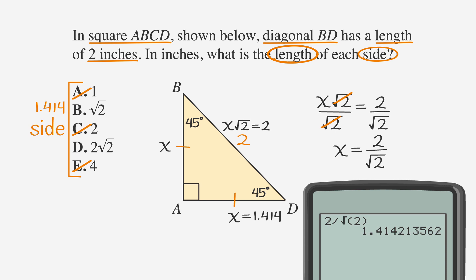When we put choice D into our calculator, we find that 2 times the square root of 2 equals about 2.828. That's not right, so we'll cross it out. But choice B, the square root of 2, also equals about 1.414. That's the right answer.